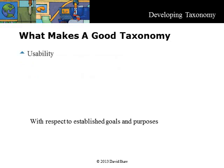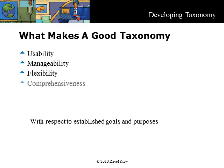What makes a good taxonomy? A good taxonomy should have these characteristics with respect to the established business goals and purposes. It should have usability, manageability, flexibility, and comprehensiveness. It should be effective and efficient to use. We will discuss these in more detail in the next few screens.